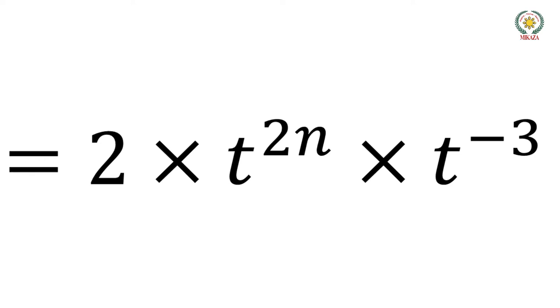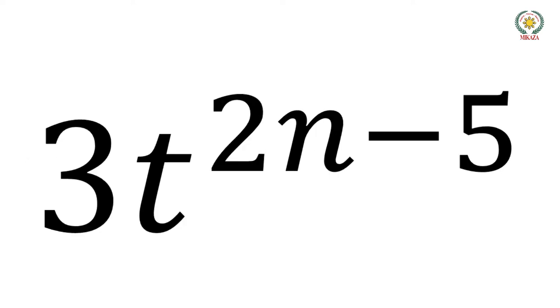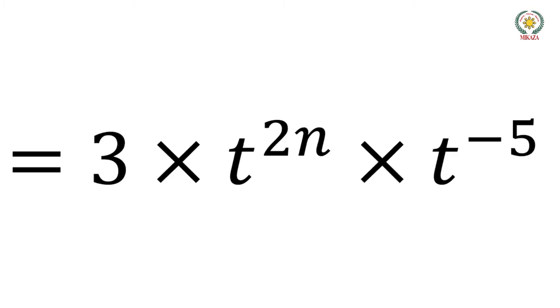We have t to the power 2n and t to the power minus 3. For t to the power 2n minus 5, the coefficient is 3.